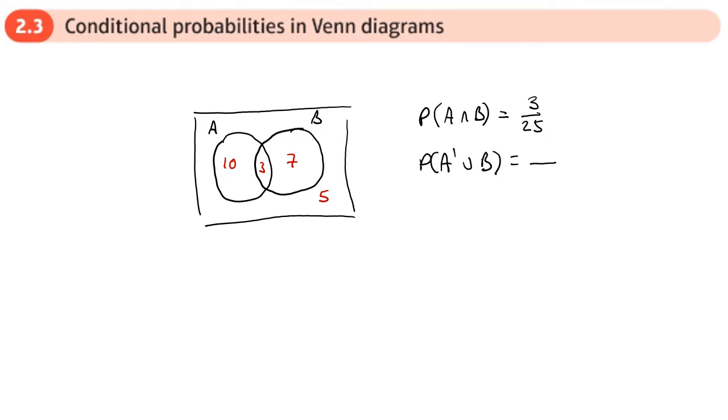So this would be everything that's not in A and in B. I might do a bit of shading to help me with this. So let's shade everything that's not in A first of all. That's all this stuff here. That's not in A.